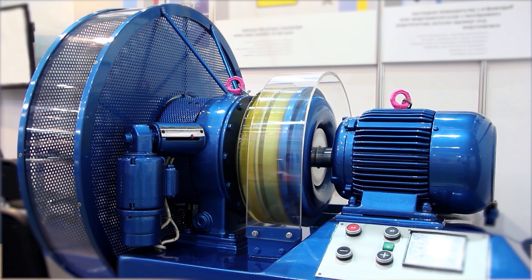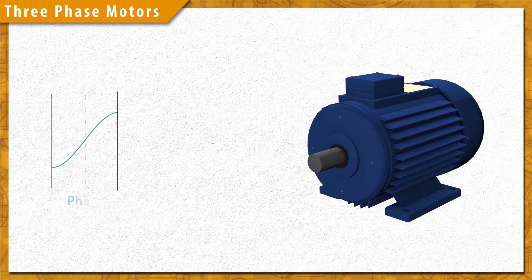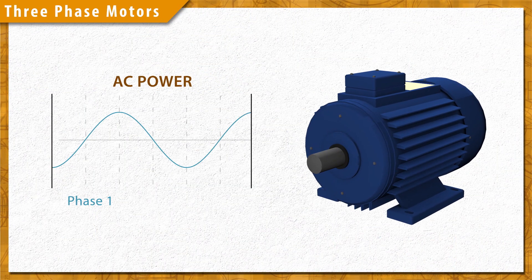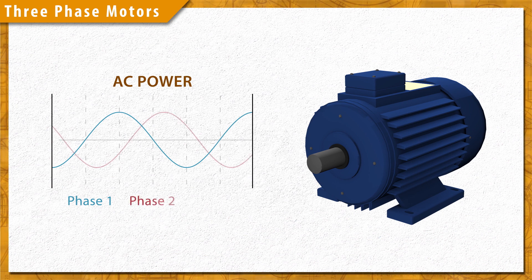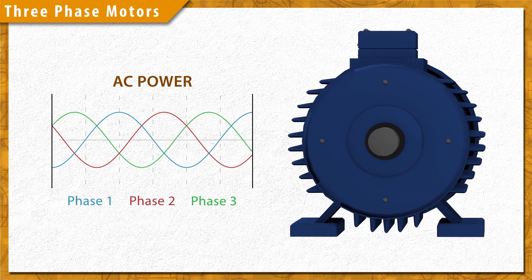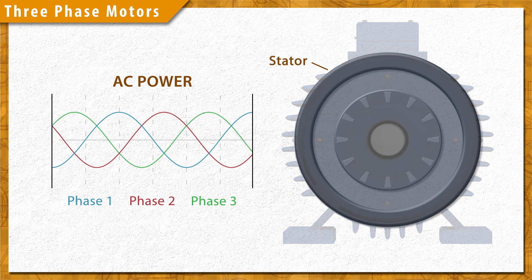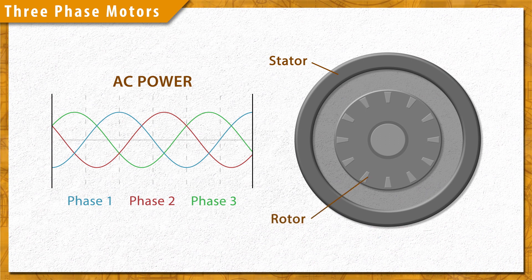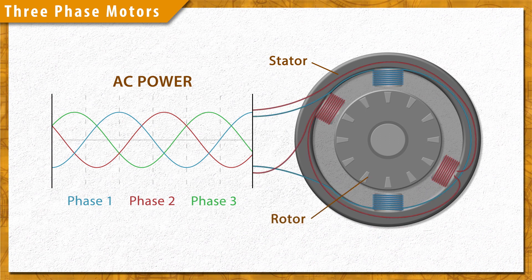To understand single phase motors, it's best to look at industrial three phase motors. These are designed to run on three phase AC power. Each phase of power is offset 120 degrees in time. The stator is the stationary part of the motor. It has three pairs of windings each connected to one phase of power.